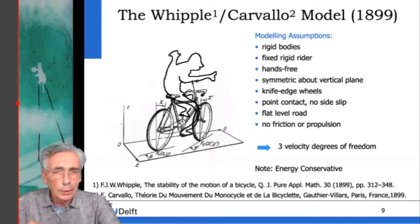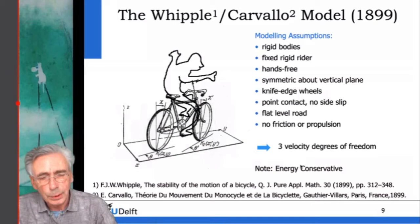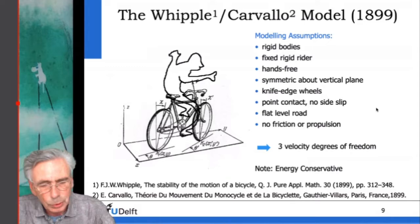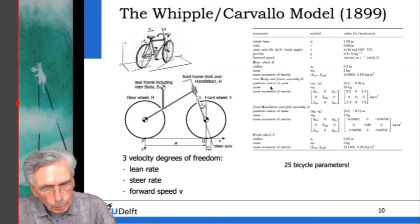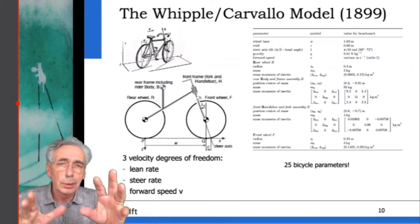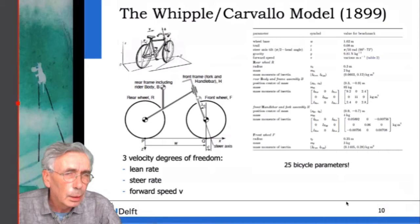The three degrees of freedom are: lean, steer, and forward motion. Notably this system is energy conservative — which is interesting because we saw a damped oscillation. The bicycle has 25 parameters: wheelbase, trail, steer axis tilt, wheel radius, mass, and mass moments of inertia. By adjusting all 25 parameters you can have all kinds of bikes — recumbents, folding bikes, and so on.